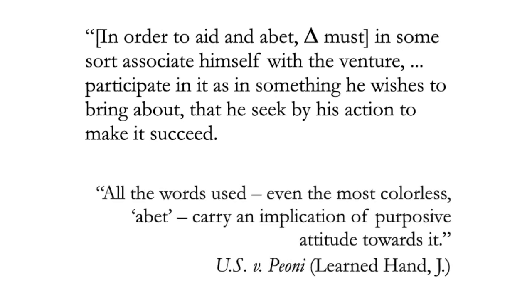All the words used, even the most colorless 'abet,' carry an implication of purposive attitude towards it. This is the culpability that must be shown: purpose. In Gladstone, there was no evidence that the defendant cared one way or the other whether Thompson bought from Kent. There was a failure of proof of the culpability element.